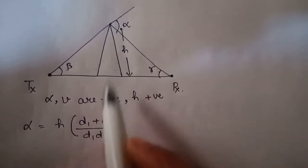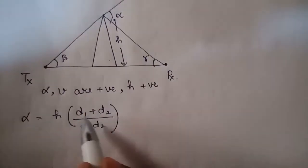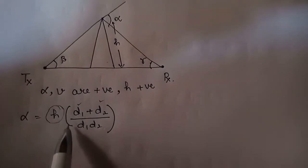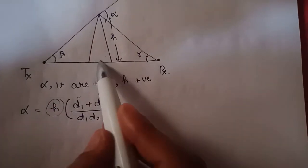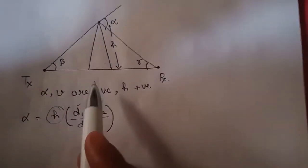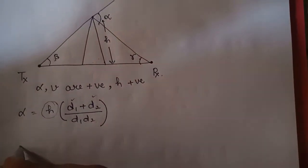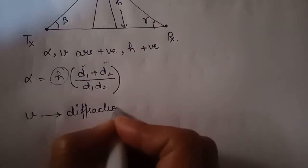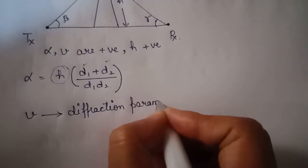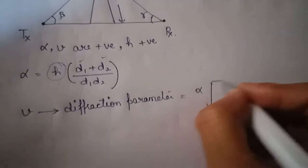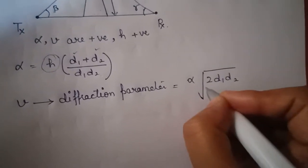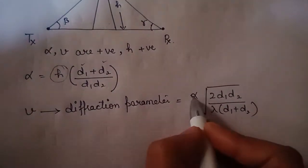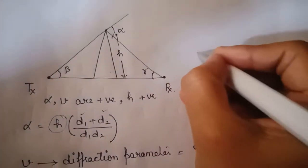Alpha varies because it depends on d1, d2, and h. The distance h can vary, d1 can vary, and d2 can vary. Alpha varies only because of the height and distances between transmitter, obstacle, and receiver. In this first case, alpha is positive and h is positive. The diffraction parameter v equals alpha times the square root of (2 d1 d2) divided by (lambda times (d1 plus d2)), where lambda is the wavelength of the signal.